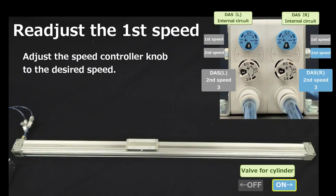Here, the speed controller is fully opened in a single adjustment. If the cylinder collides with the stroke end, adjust the knob of the speed controller in the negative direction to lower the first speed.